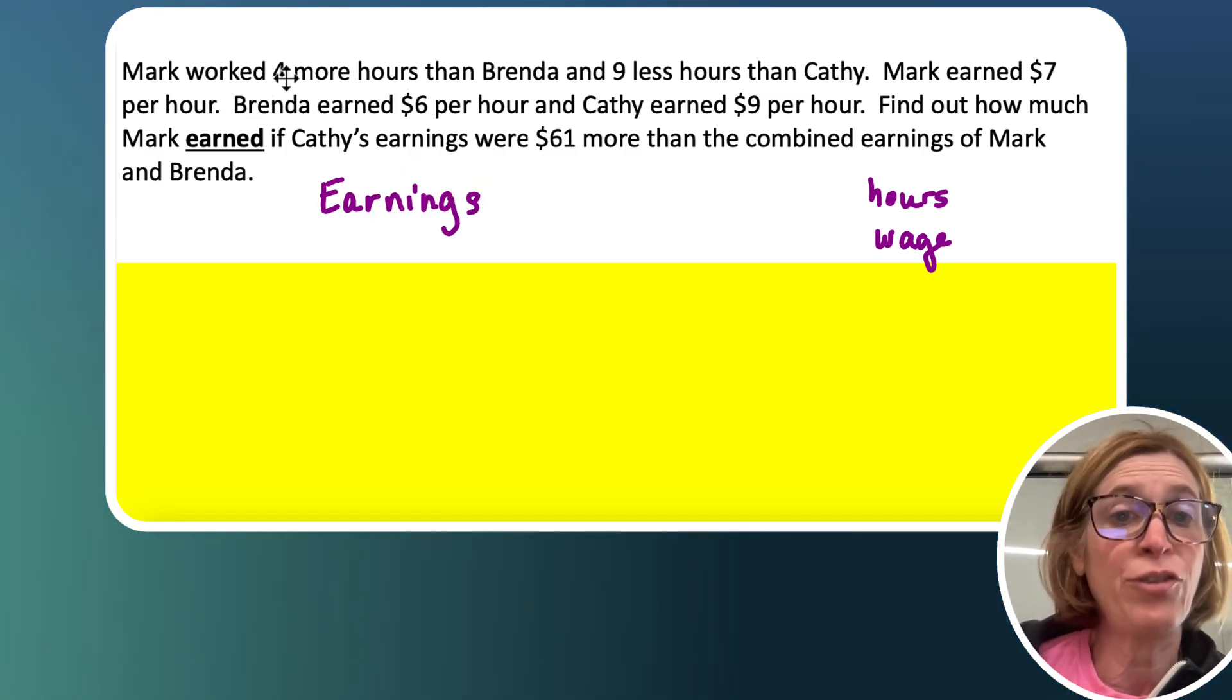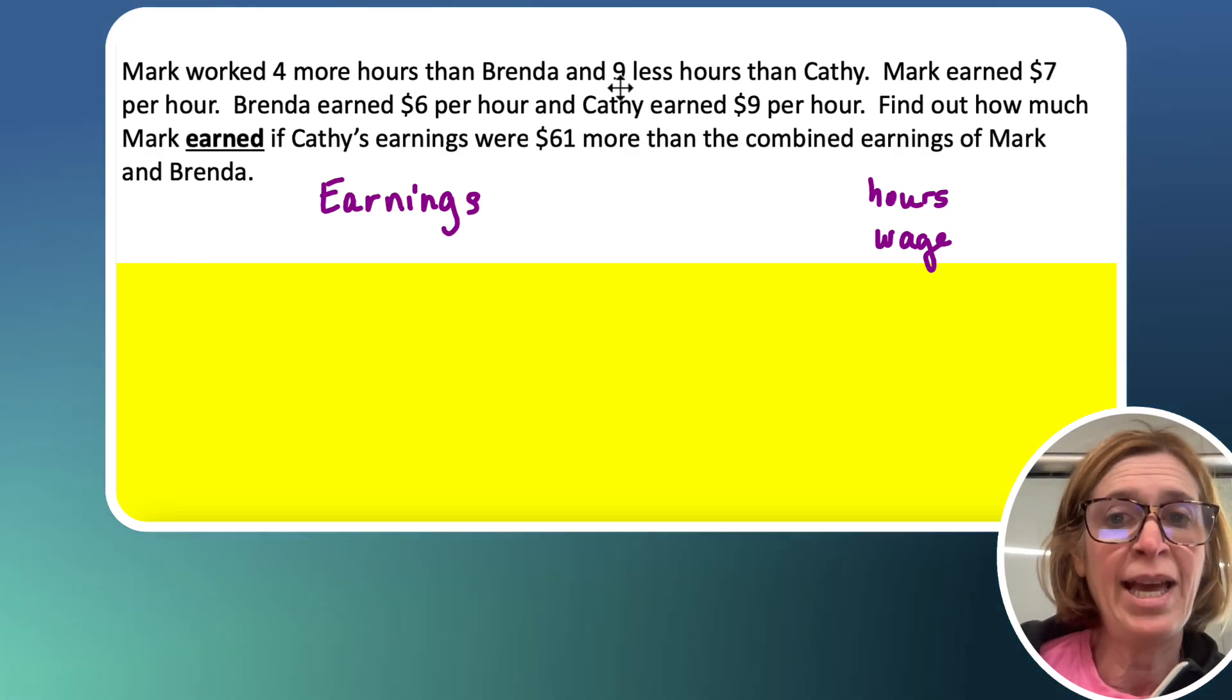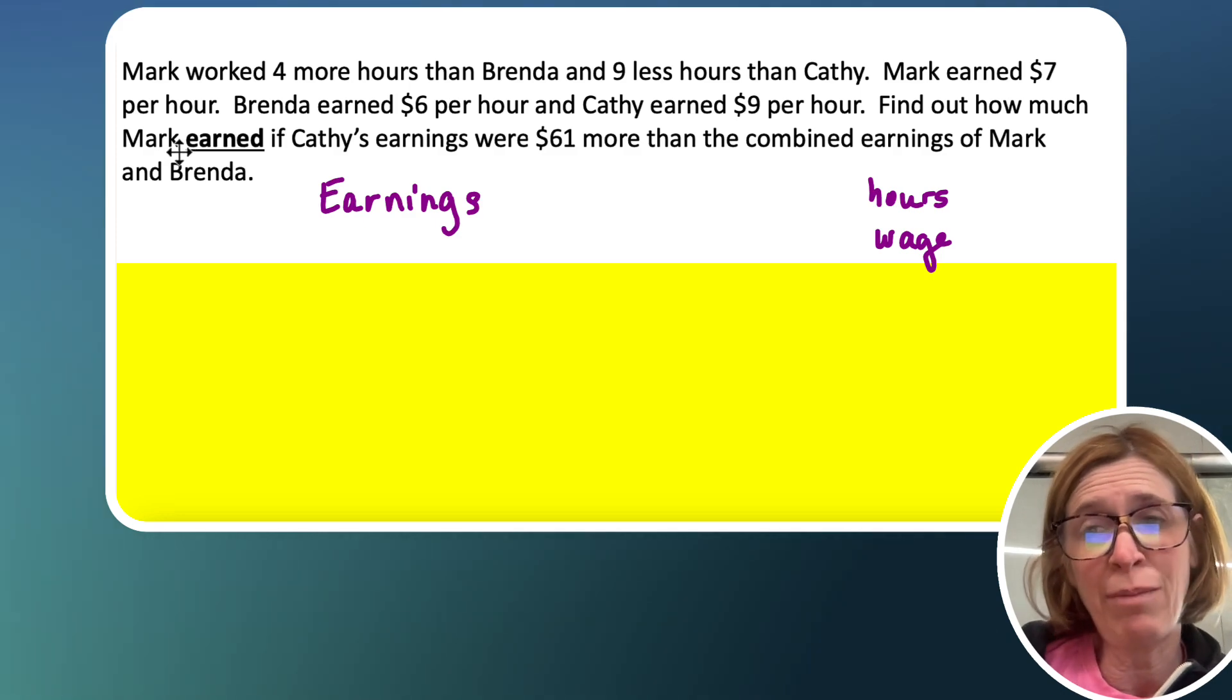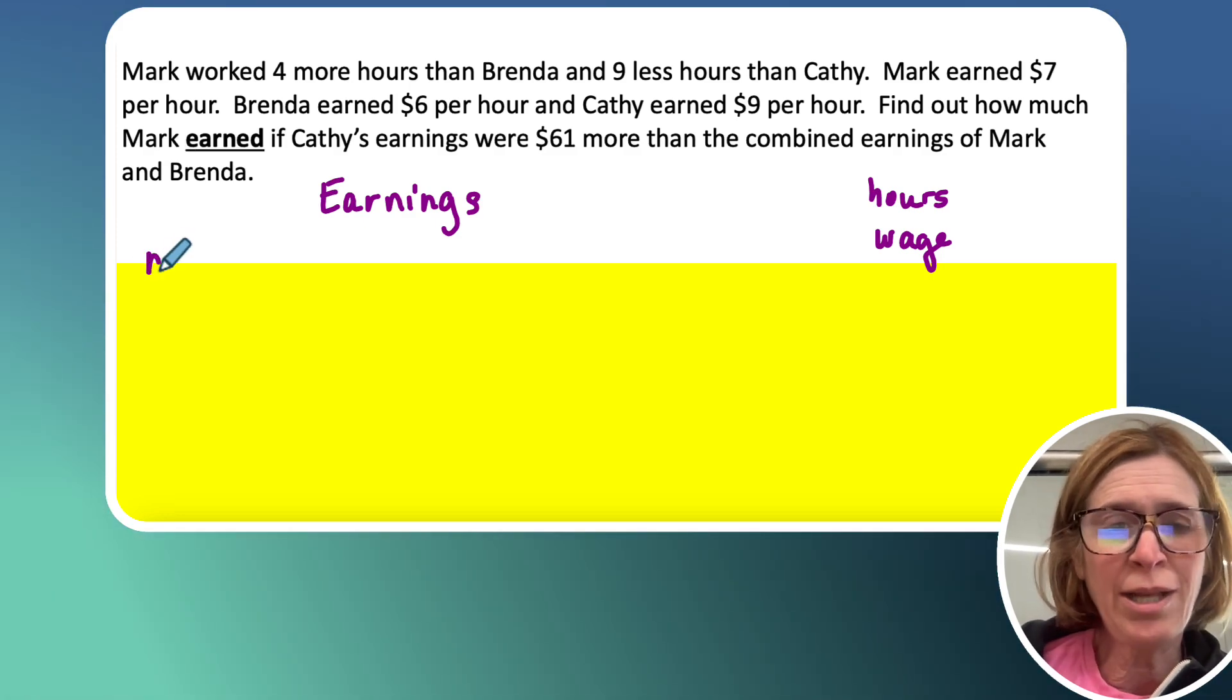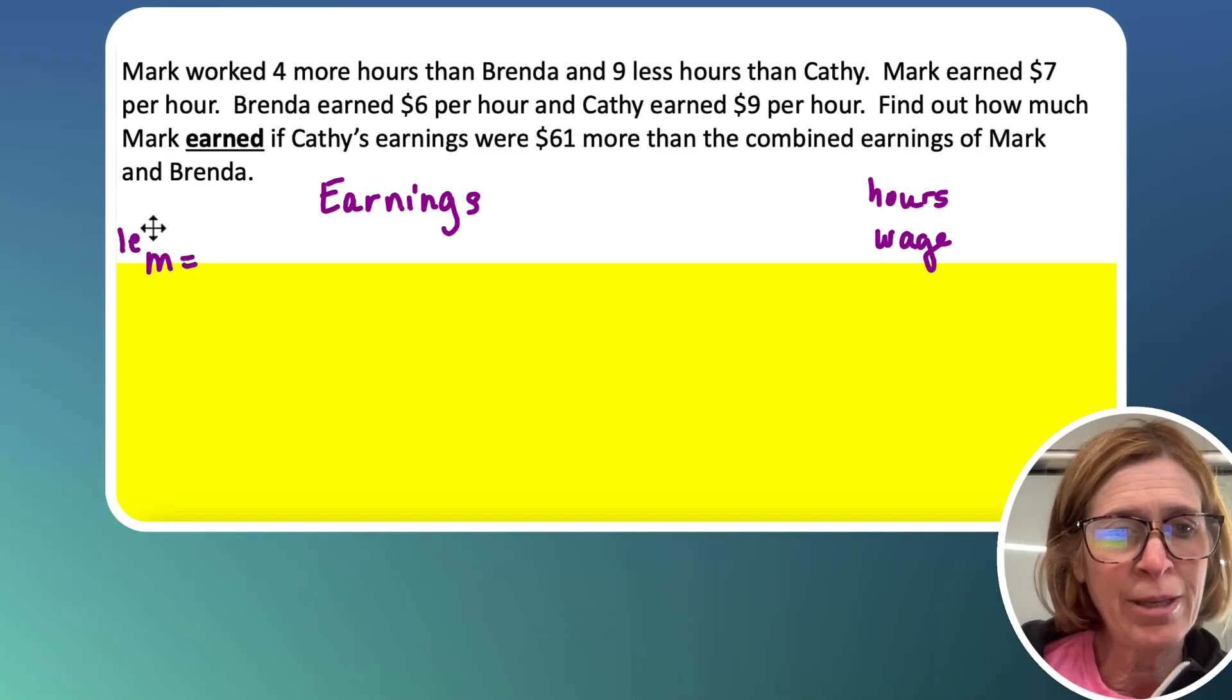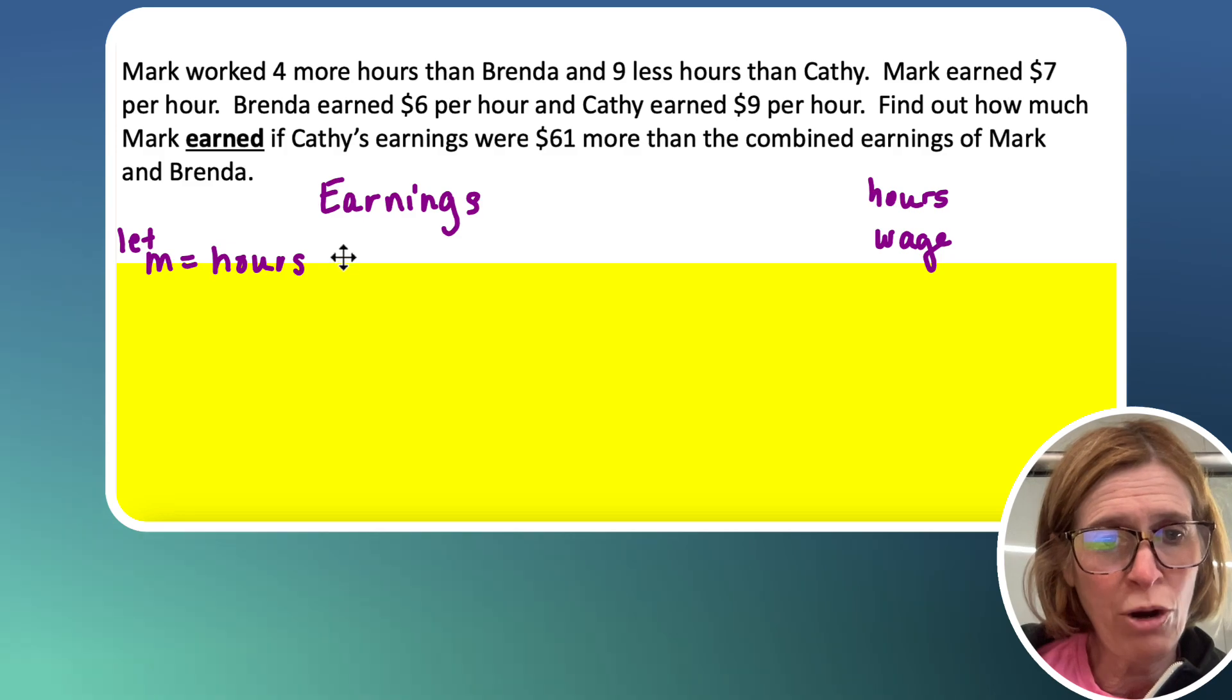Alright, so I'm going to start with the first sentence. Mark worked four more hours than Brenda and nine less hours than Kathy. Since the question's asking me to find out how much Mark earned, I'm going to write it in terms of Mark. So I'm going to let M equal the hours Mark worked.